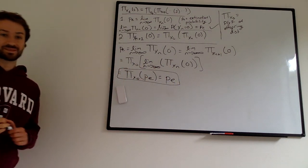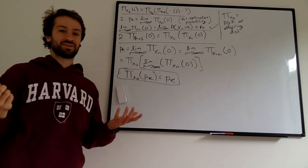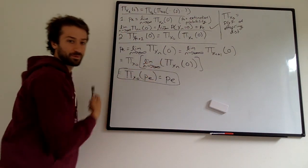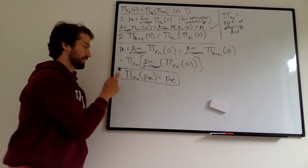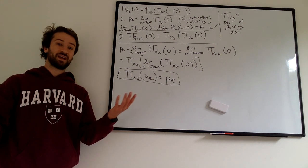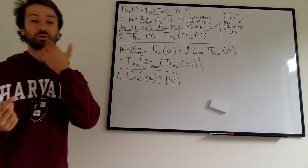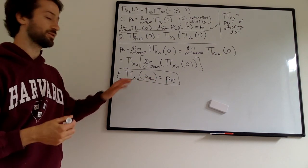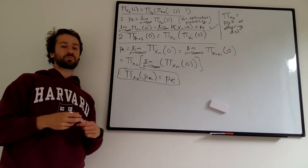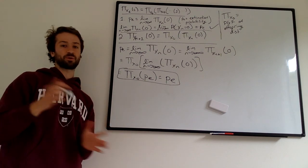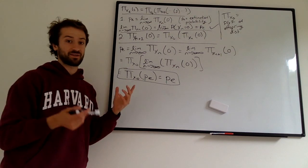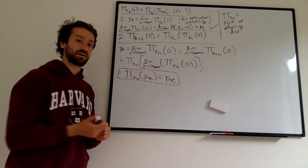That inner limit is just P sub E by Fact 1. So we've shown that P sub E equals the PGF of the offspring distribution evaluated at P sub E. We have P sub E on both sides, but it's the only unknown, so we can use this equation to actually solve for the extinction probability. This is why we've done this whole exploitation of probability generating functions — we need the cool properties of the PGF to actually solve for this, and P sub E appears in our answer.